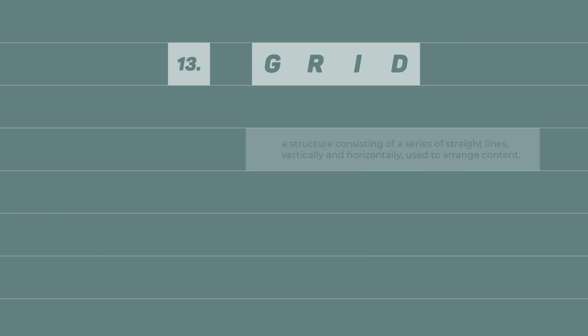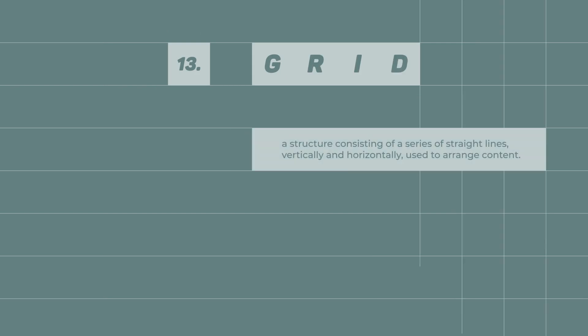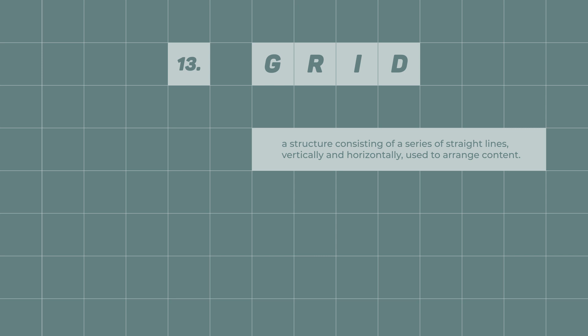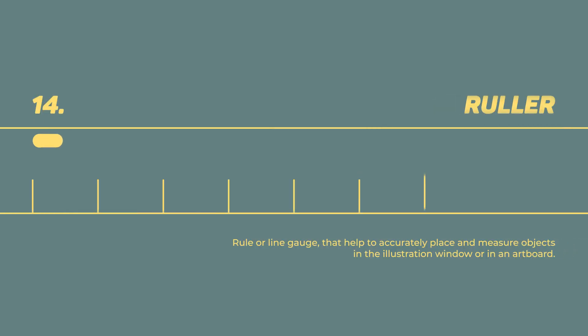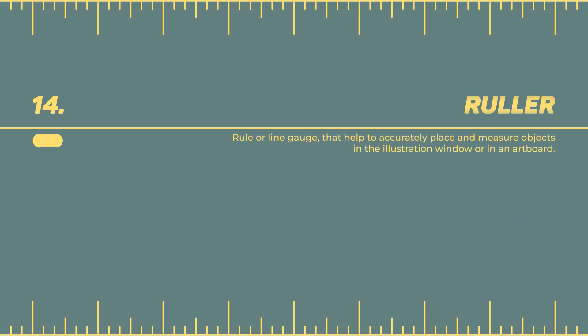Grid — a structure consisting of a series of straight lines, vertically and horizontally, used to arrange content. Ruler — a rule or line gauge that helps to accurately place and measure objects in the illustration window or in an artboard.